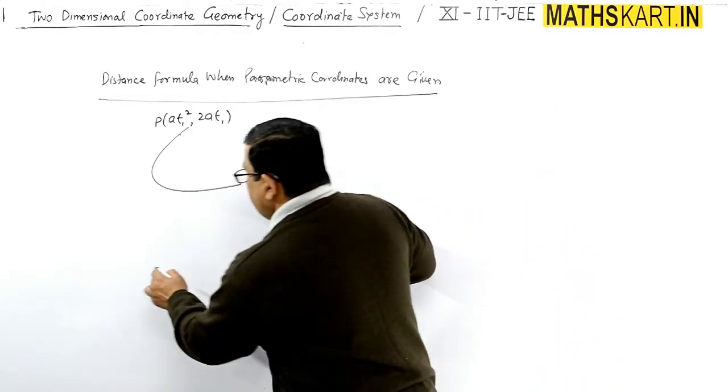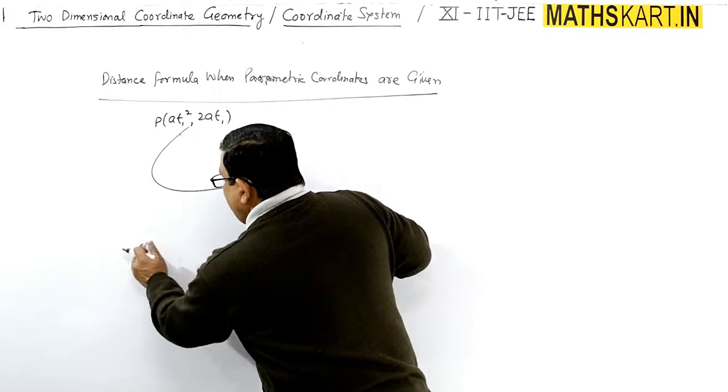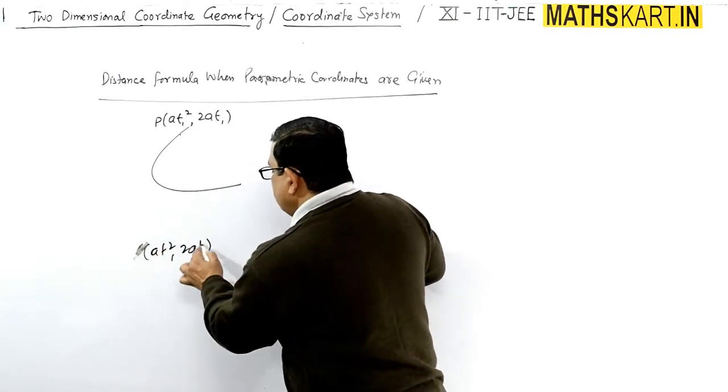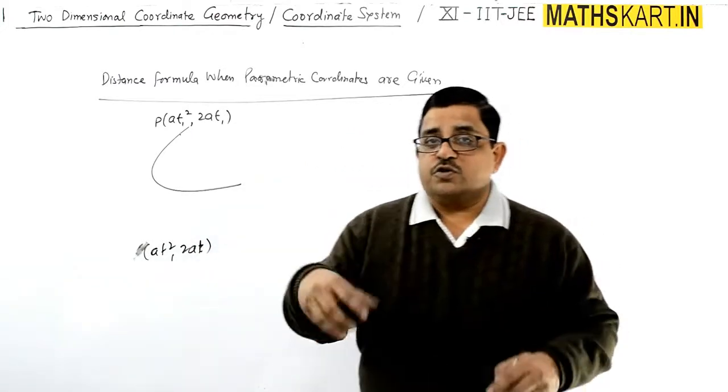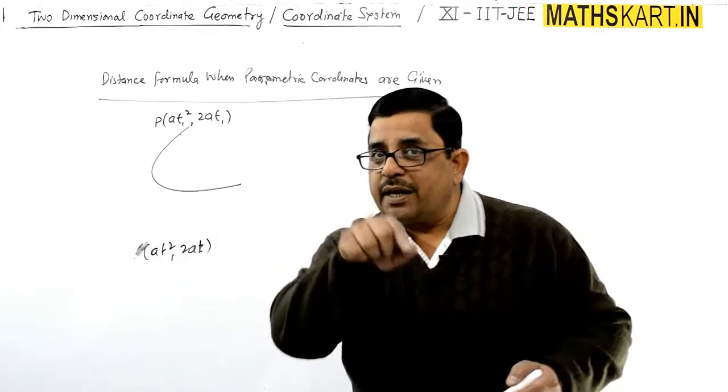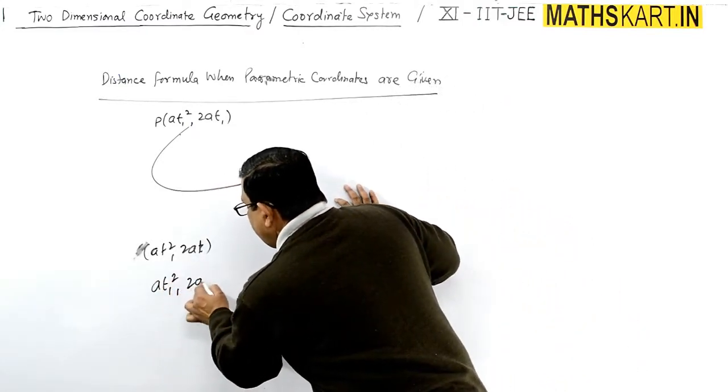Suppose general coordinates on the parabola, I'll write P, at square, this is at square, 2at, and t is the parameter. Suppose more than one parametric coordinates are there on to the parabola.